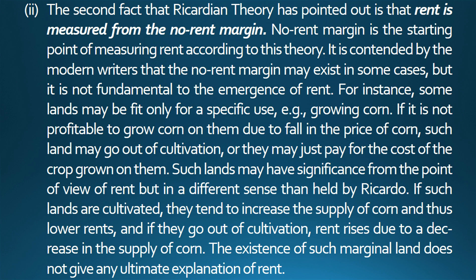Two: the second fact that Ricardian theory has pointed out is that rent is measured from the no-rent margin. No-rent margin is the starting point of measuring rent according to this theory. It is contended by the modern writers that the no-rent margin may exist in some cases, but it is not fundamental to the emergence of rent. For instance, some lands may be fit only for a specific use, such as growing corn. If it is not profitable to grow corn on them due to fall in the price of corn, such land may go out of cultivation, or may just pay for the cost of the crop grown on them. Such lands may have significance from the point of view of rent in a different sense than held by Ricardo. If cultivated, they tend to increase the supply of corn and thus lower rents, and if they go out of cultivation, rent rises due to decrease in supply. The existence of such marginal land does not give any ultimate explanation of rent.